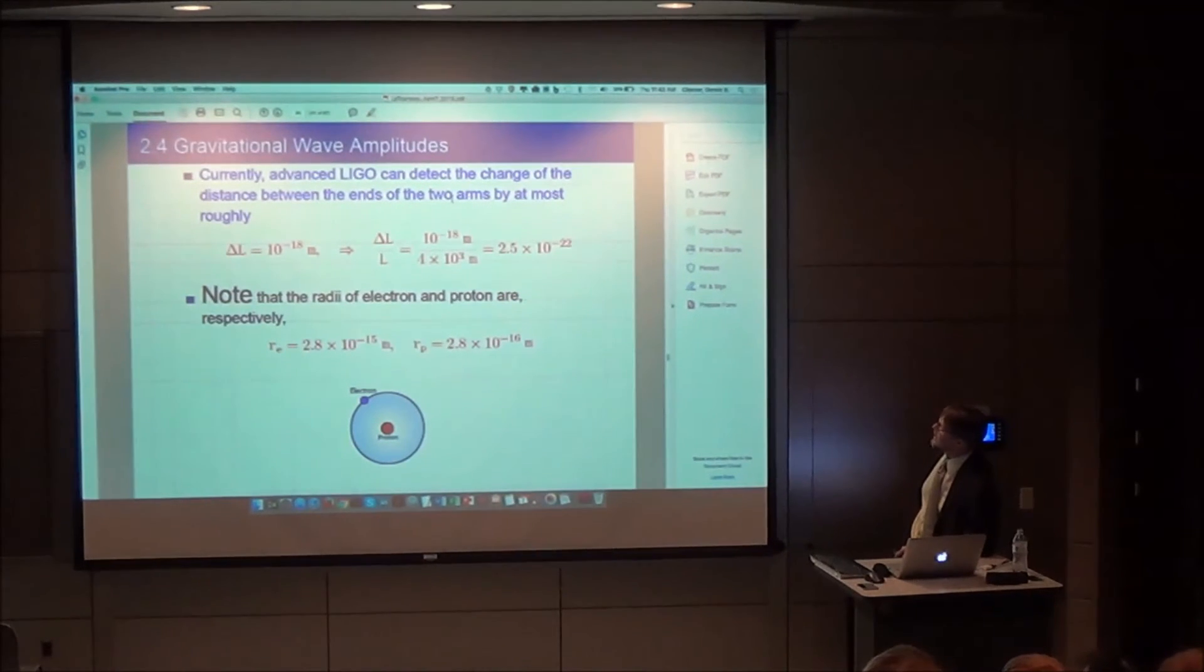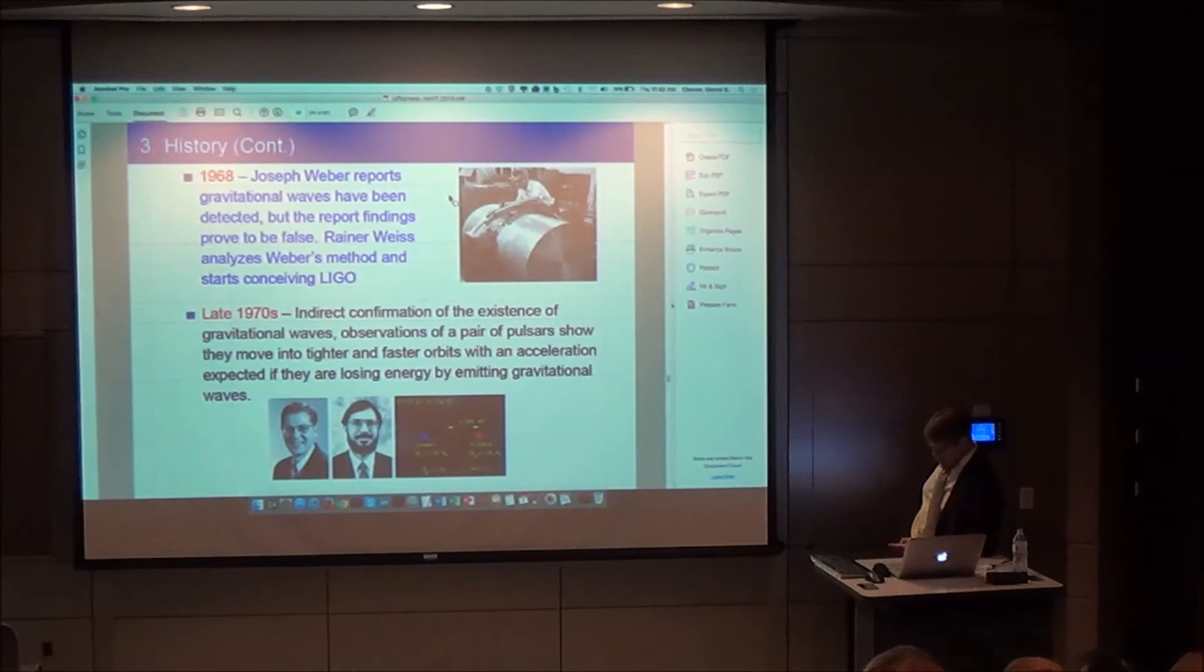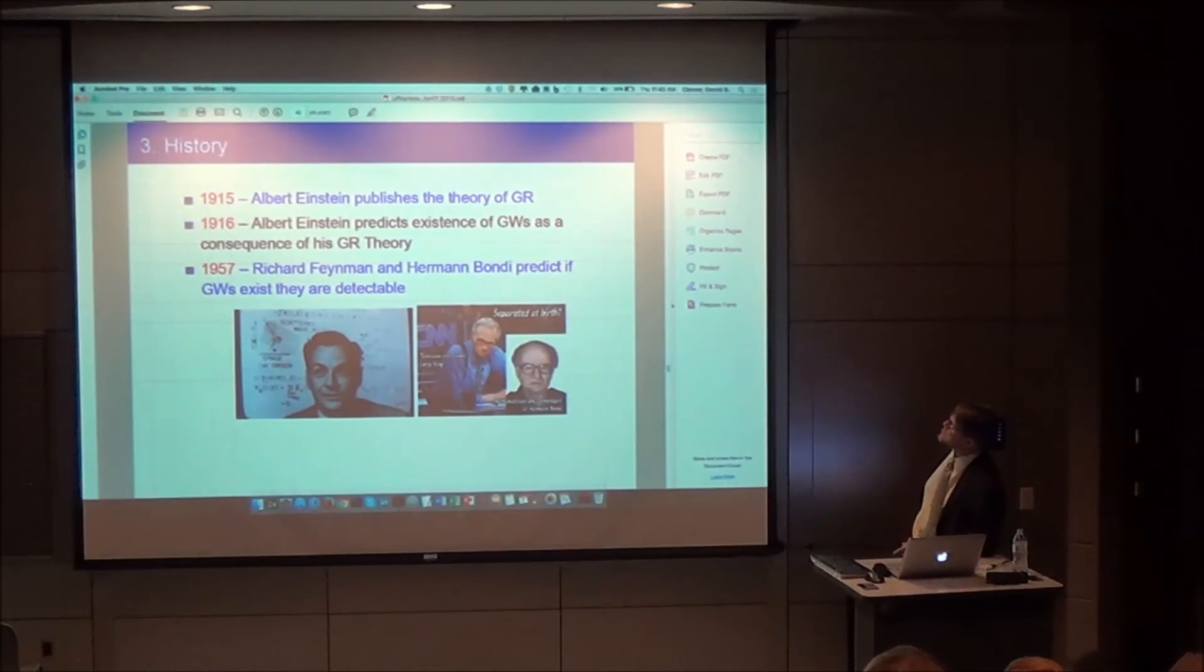The radii of electron and proton are respectively on a scale of about 10 to the minus 15 meters and 10 to the minus 16 meters. Look at the scale of the fluctuations they needed to see on the scale of four kilometers, and then you take 10 to the minus 20 of that. You're talking about change of length scales, variations smaller than the width of an atom. But the interferometer effect could actually pick up that small scale distance, which is amazing.